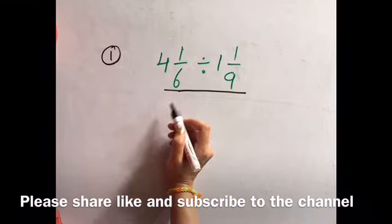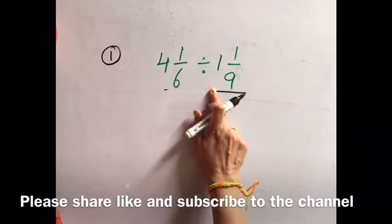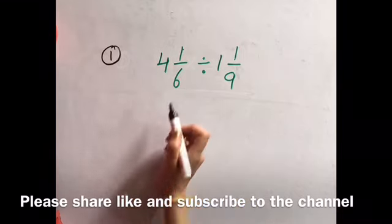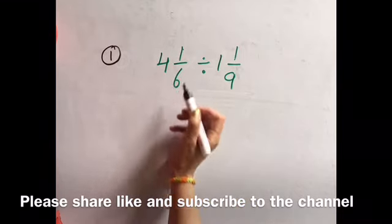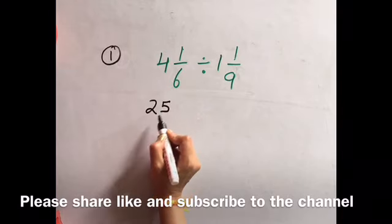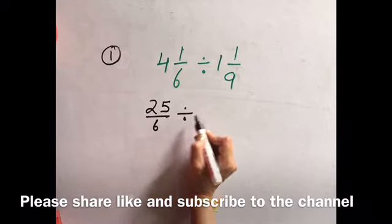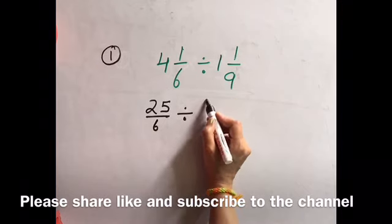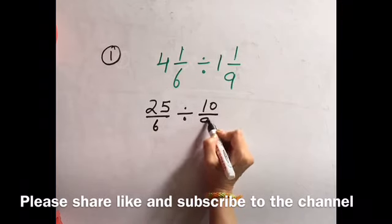So what I will do? First convert them into improper fractions. Let us do it. 6 fours are 24 plus 1, 25 upon 6 divided by 9 ones are 9 plus 1, 10 upon 9.